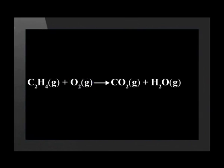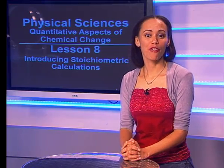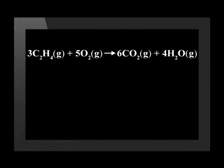The products on the right hand side are carbon dioxide and water. First, we need to balance the equation before we do the calculations. The reaction is balanced when 3 moles of ethene react with 5 moles of oxygen to form 6 moles of carbon dioxide and 4 moles of water.